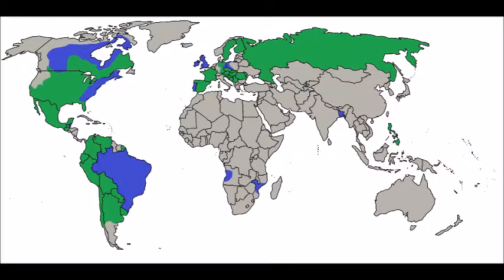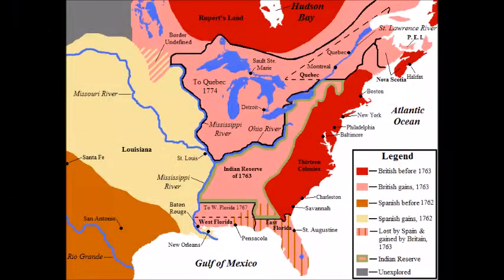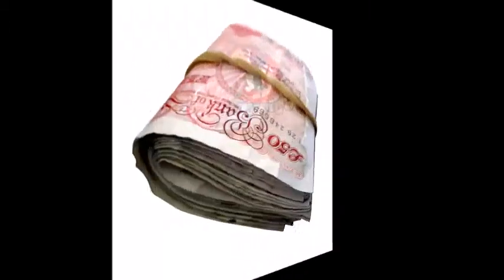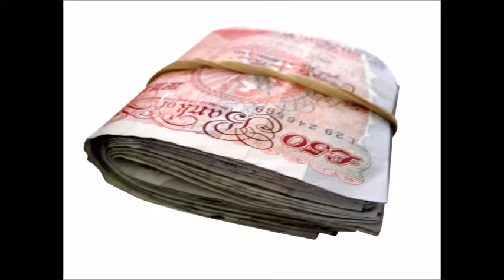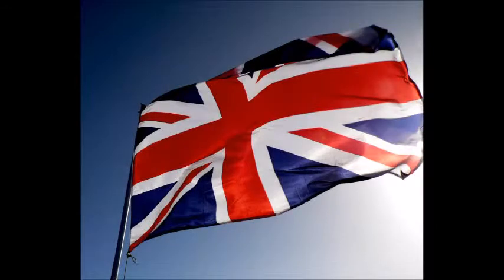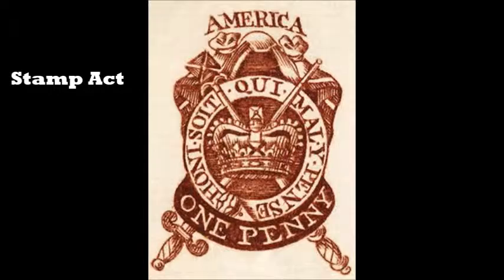The Seven Years' War is a very broad term for a series of conflicts that took place all over the world. The part that we as Americans care about is known as the French and Indian War. Long story short, Great Britain won, and the 13 colonies' territory doubled in size. While Great Britain was victorious, the war had also been very expensive. And in their eyes, the fact that the colonists now had more land also meant that they had more money.